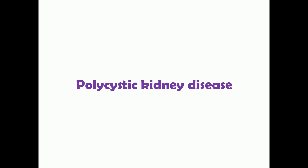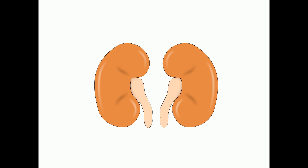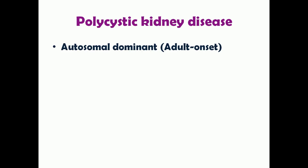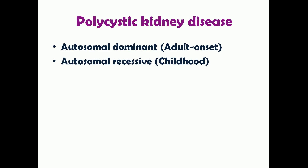In this video we're going to cover polycystic kidney disease. This disease affects the kidneys significantly. There are two types: the first is autosomal dominant type, also known as adult onset polycystic kidney disease, and the second is autosomal recessive type, also known as childhood polycystic kidney disease. As the names suggest, the dominant type is most common in adults and the recessive type is most common in children.